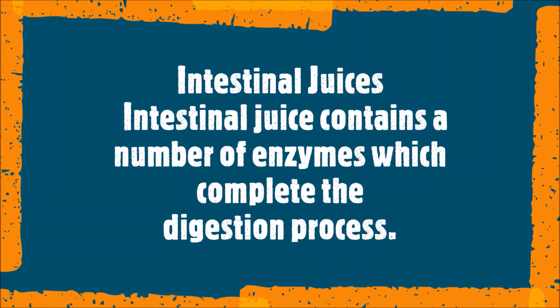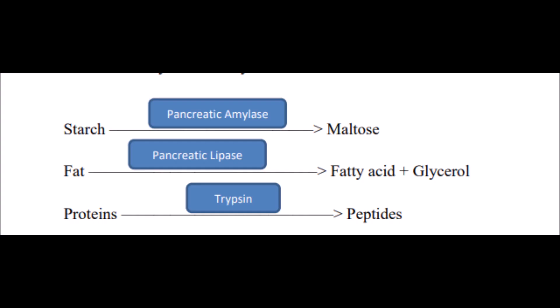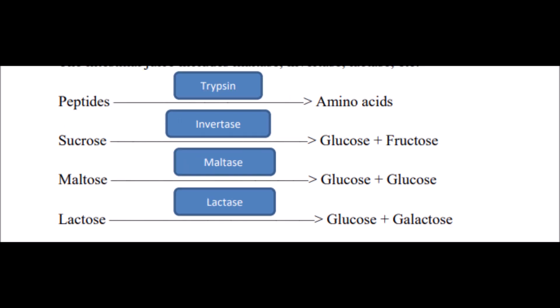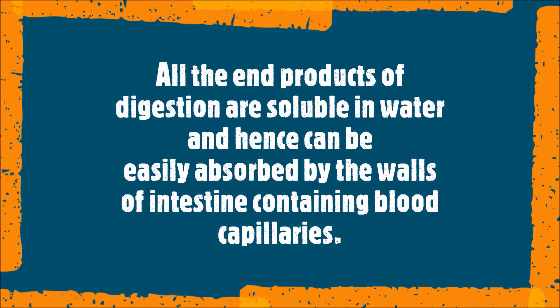The intestinal juices contain a number of enzymes which complete the digestion process. Complex carbohydrates are converted into glucose, proteins into amino acids, and fats into fatty acids and glycerol. Peptides are converted into amino acids by trypsin. Sucrose in the presence of invertase is converted into glucose and fructose. Maltose in the presence of maltase is converted into glucose and glucose. Lactose in the presence of lactase is converted into glucose and galactose. All end products of digestion are soluble in water and can be easily absorbed by the walls of the intestine containing blood capillaries.